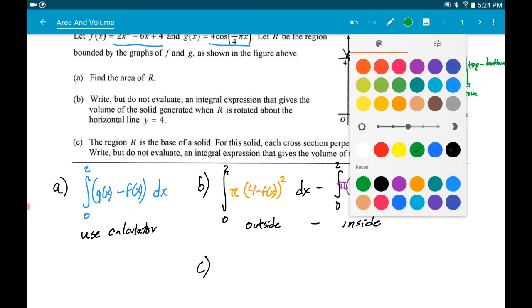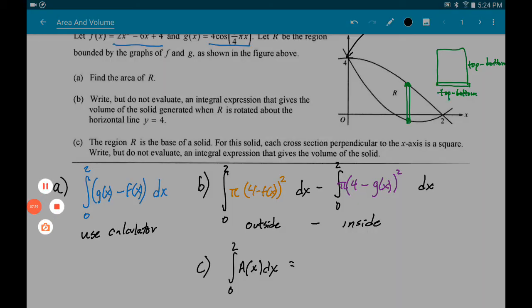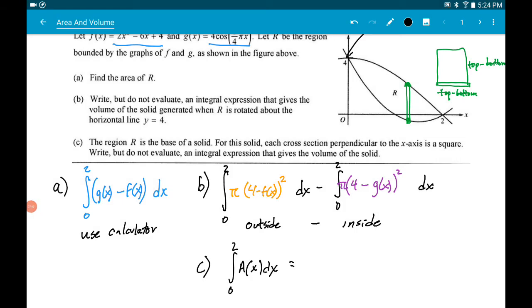And when you do these cross sections, the general formula is the area of the cross section goes inside the integral. When we did the disk method, the cross section was a bunch of disks, a bunch of circles. Pi r squared, pi r squared, pi r squared. But now, the area of that cross section is the area of a square. And the dimensions of that square are the top minus the bottom. But it's base times height. And because it's a square, they're the same thing. So kind of weird, right? It's top minus bottom. That's like your base. Base times height to be the area of that square. And so that is the setup for part C.